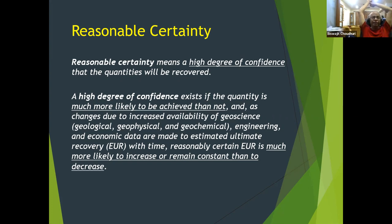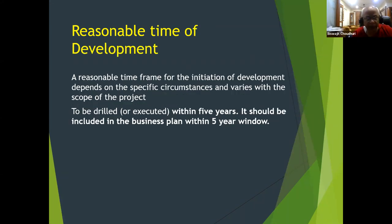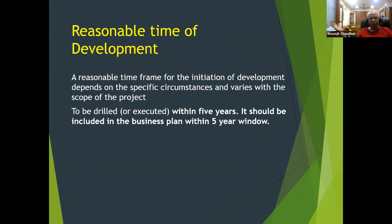SEC defines reasonable certainty as: your expected ultimate recovery — cumulative past production plus estimated future production — should consistently remain constant or increase over time; it can never decrease. That is a very high-confidence estimate. They also define reasonable time for development: in a large project like one currently drilling 480+ wells in Oman, SEC specifies that any well drilled beyond five years from the reporting date cannot be included in proved undeveloped reserves.